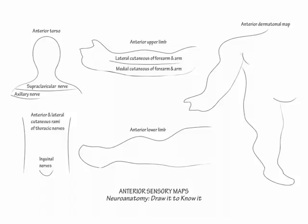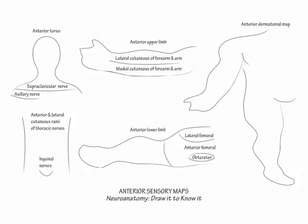Show the lateral femoral cutaneous nerve covers the lateral aspect of the thigh and the anterior branches of the femoral nerve cover the medial and anterior thigh. Next, show the obturator nerve covers a small patch on the medial aspect of the thigh. Then indicate the saphenous nerve, the sensory extension of the femoral nerve, covers the medial aspect of the lower leg to the instep of the foot.